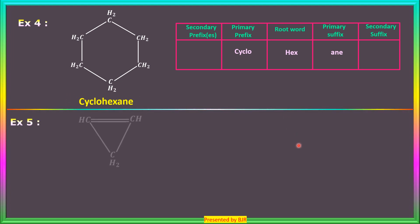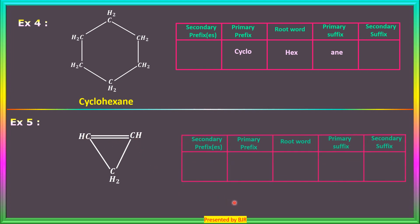Example 5: A ring of carbon atoms with a double bond between two carbon atoms. Three carbon atoms are in the ring, so the root word is 'prop'. There is one carbon-carbon double bond, so the primary suffix is 'ene'. The primary prefix is 'cyclo'. The name of this alicyclic compound is cyclopropene.